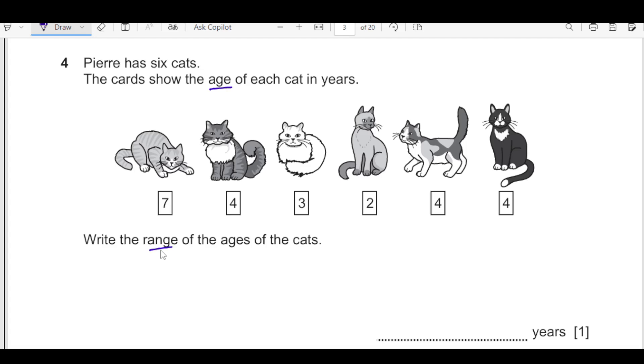Range is maximum value minus minimum value. As you see that maximum age we have here is 7 and the minimum is 2. So 7 minus 2 it is 5. So final answer is 5 years.